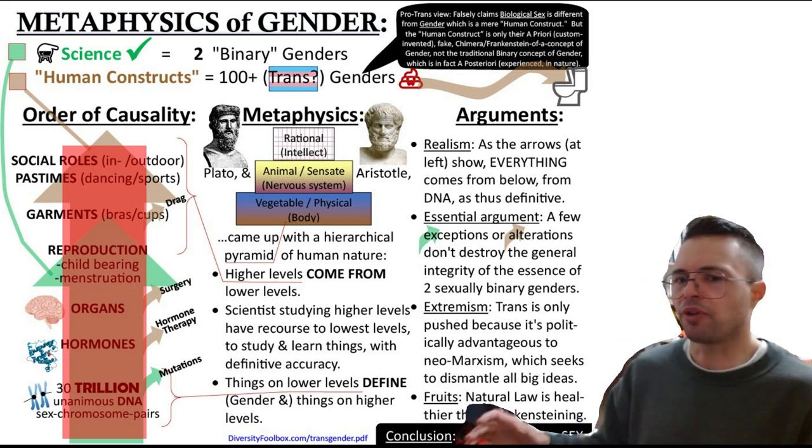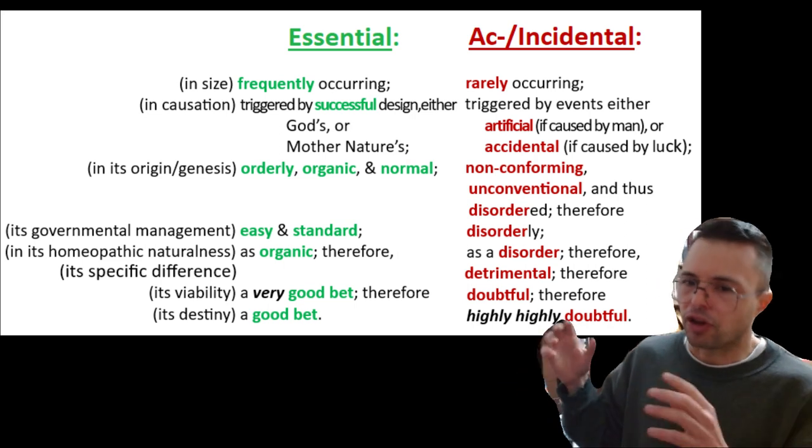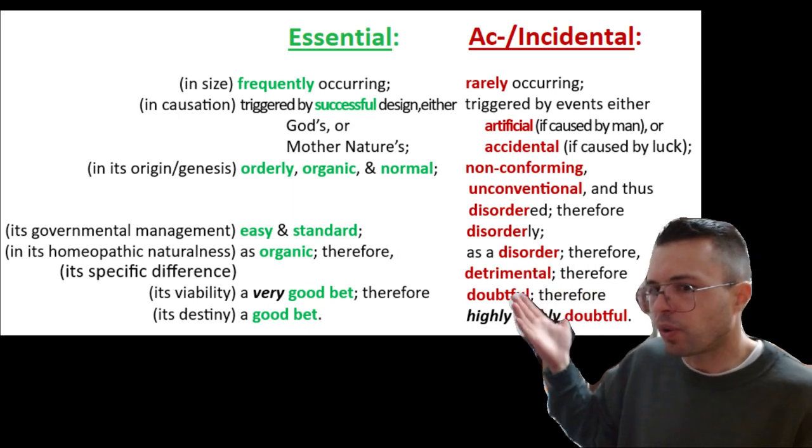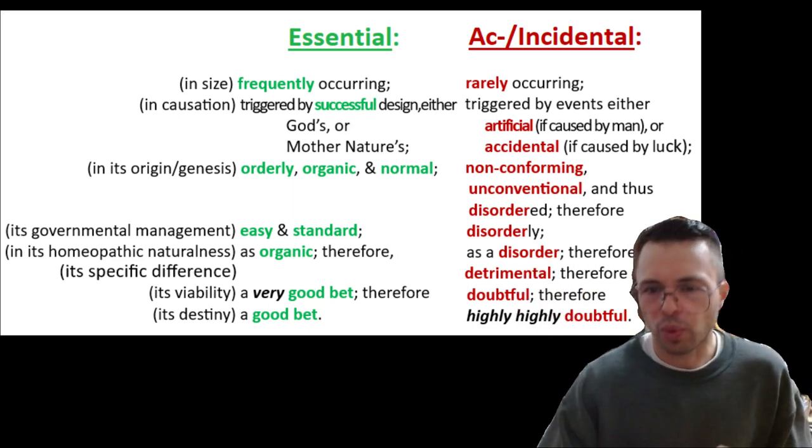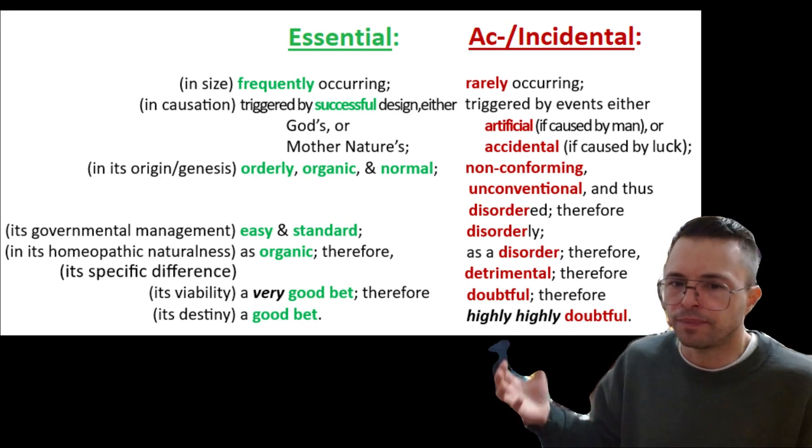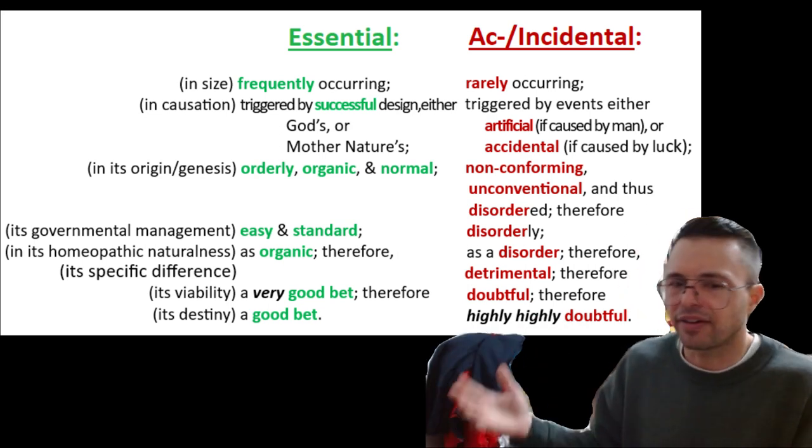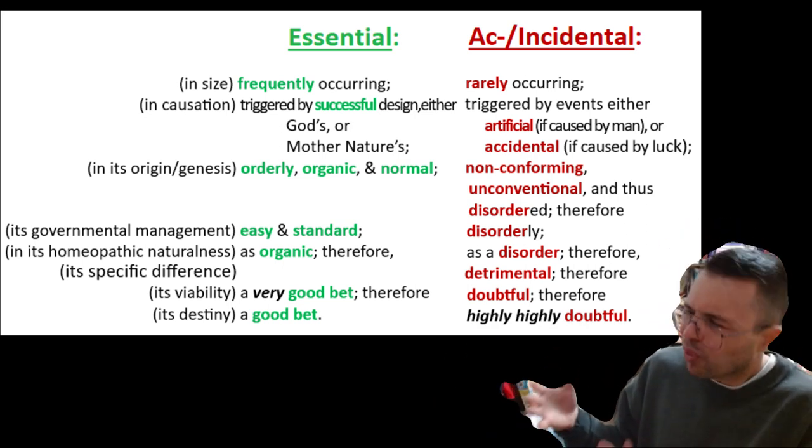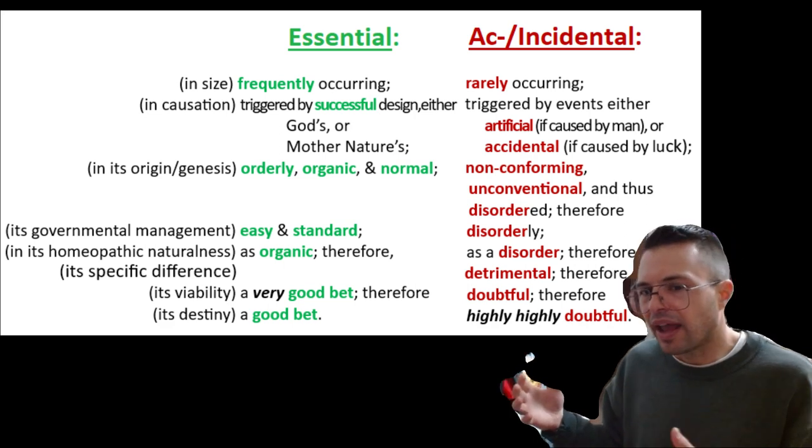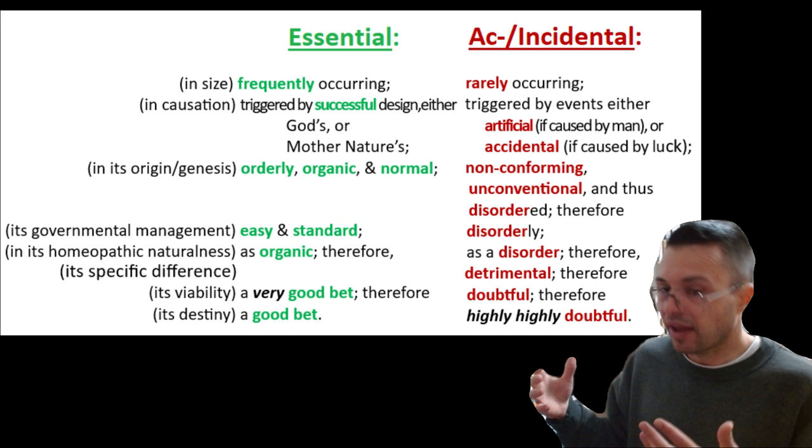But consistently contrast those exceptions with the general whole. Buttress up the general as, in size, frequently occurring, in causation, triggered by successful design, either gods or mother natures, in its origin or genesis, orderly, organic, and normal, in its governmental management, as easy and standard, in its homeopathic naturalness, as organic, in its viability, therefore, as a very good bet, and therefore, in its destiny, as a good bet.